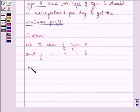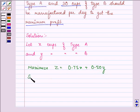We need to maximize the profit. Let us take it as Z. That is 0.75X plus 0.50Y, subject to the constraints.